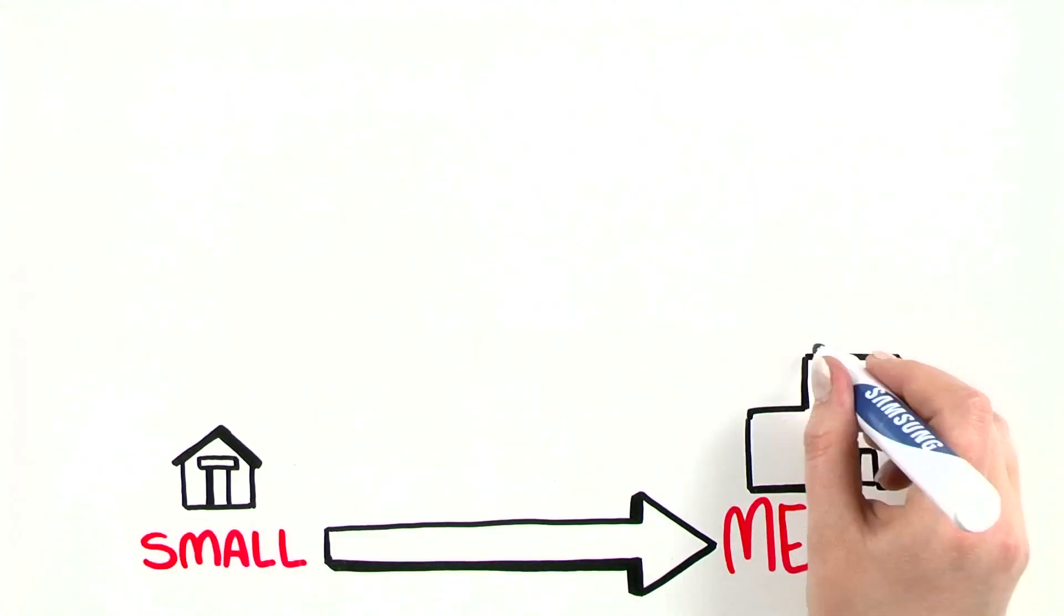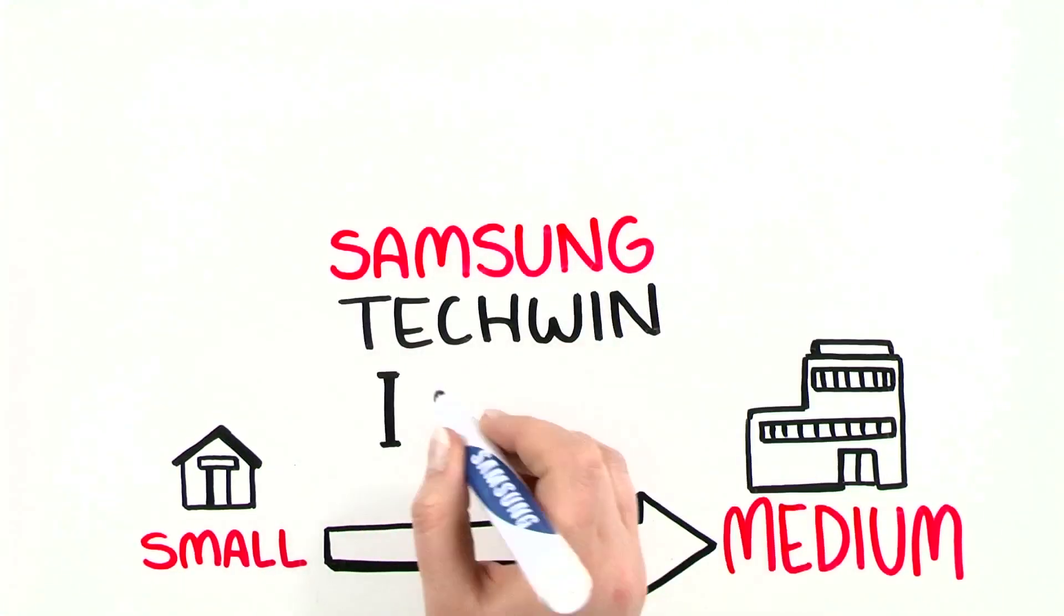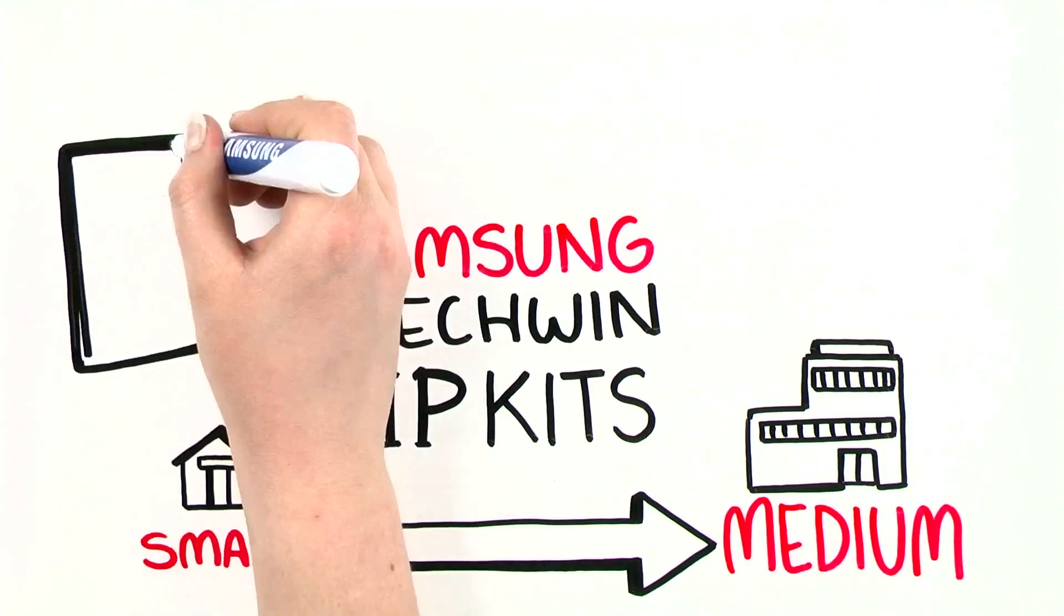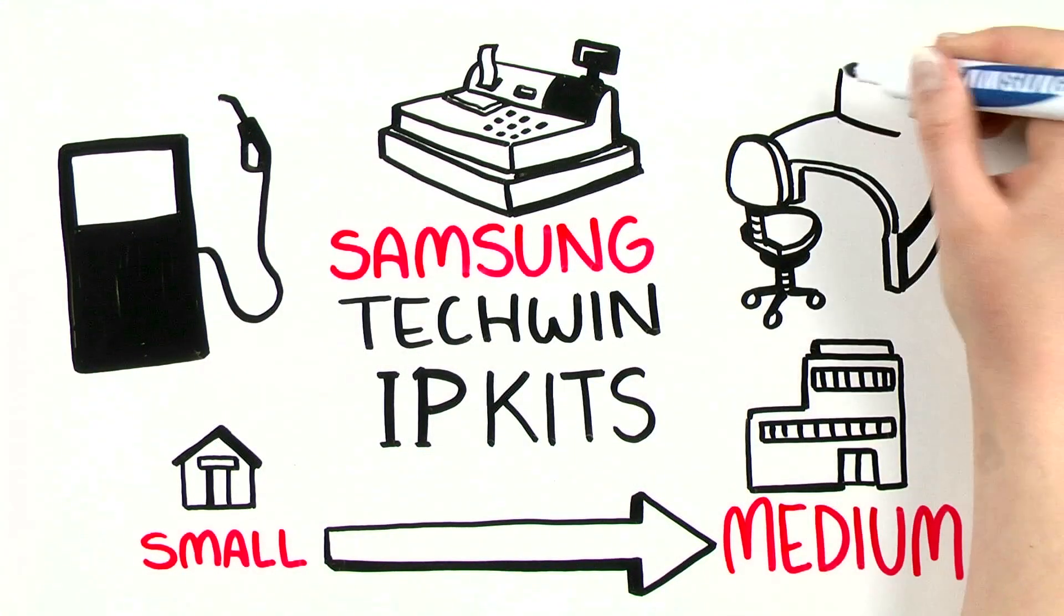Designed with small to medium businesses in mind, the Samsung Techwin IP kits are the ideal surveillance solution for gas stations, small retail shops, and offices.